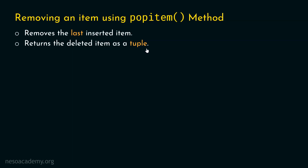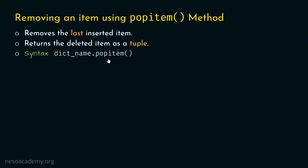For now, think of a tuple as a list, but with round brackets instead of square brackets. We will understand tuples in greater detail later on. Now, the syntax of the popitem method: first specify the name of the dictionary, then dot, then popitem. Within the round brackets, we do not have to specify anything, because popitem always removes the last inserted item.